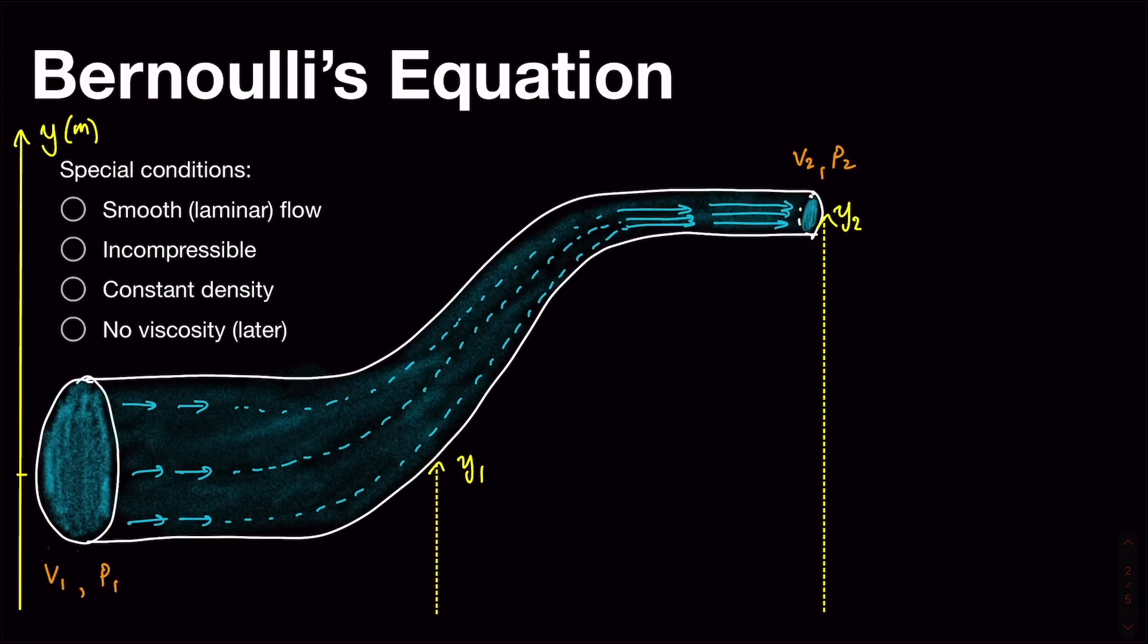We're going to imagine a slightly specialized situation now. So we've got a pipe. This is a slightly strange pipe in that it has a cross-section that changes as you go along the pipe. It goes from big here to small here. And this pipe also changes its elevation.